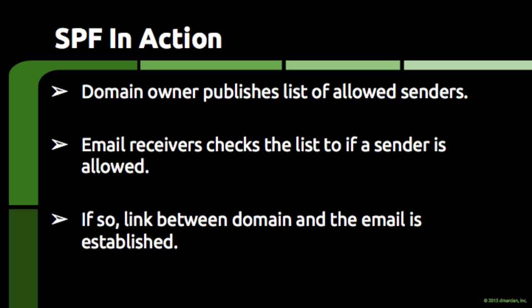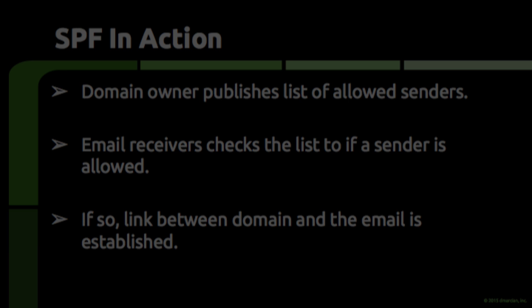To use SPF, the administrator of an email domain publishes a list of senders that are allowed to send email on behalf of the domain. When a sender tries to hand off email to an email server for delivery, the email server checks to see if the sender is on the domain's list of allowed senders. If so, then a link has been established between the piece of email and the email domain.